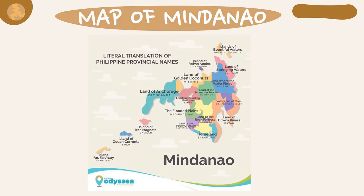Literal translations of Philippine provincial names in Mindanao: Islands of Bountiful Waters — Dinagat Islands; Islands of Velvet Apples — Camiguin; Island of Springing Waters — Surigao; Land of Golden Coconuts — Misamis; Land Where the Water Flows — Agusan; Land of the Mountain People — Bukidnon; Land of Akkoraj — Zamboanga; Land Surrounding the Lake — Lanao; Valley Full of Stars — Compostela Valley; The Flooded Plains — Maguindanao; Land of the Rock Fortress — Cotabato; Land of Brown Rivers — Davao; Land of the Powerful Sultan — Sultan Kudarat; Island of Iron Magnets — Basilan; Island of Ocean Currents — Sulu; Island Far Far Away — Tawi-Tawi; and Homeland — Sarangani.